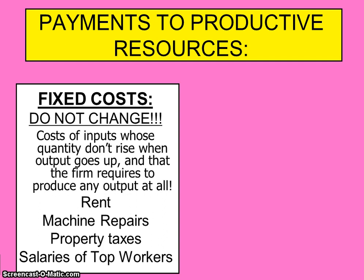Fixed costs don't change. These are the costs of inputs whose quantity don't rise when output goes up, and that the firm requires to produce any output at all. These are costs that stay the same month to month, such as rent or your mortgage payment for the building you're leasing or owning. Machine repairs are a fixed cost if it's a set fee every month. Property taxes stay the same month to month. Salaries of top workers — any salaried employees are fixed costs because you're paying them a set amount of money week to week.